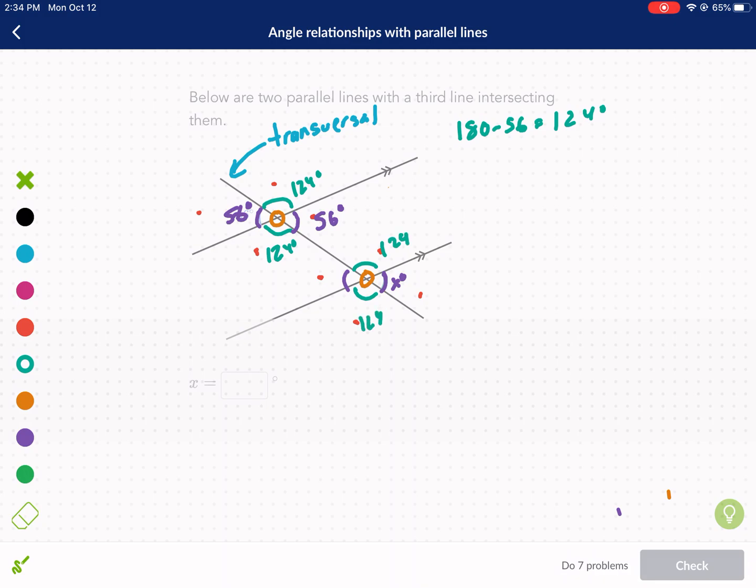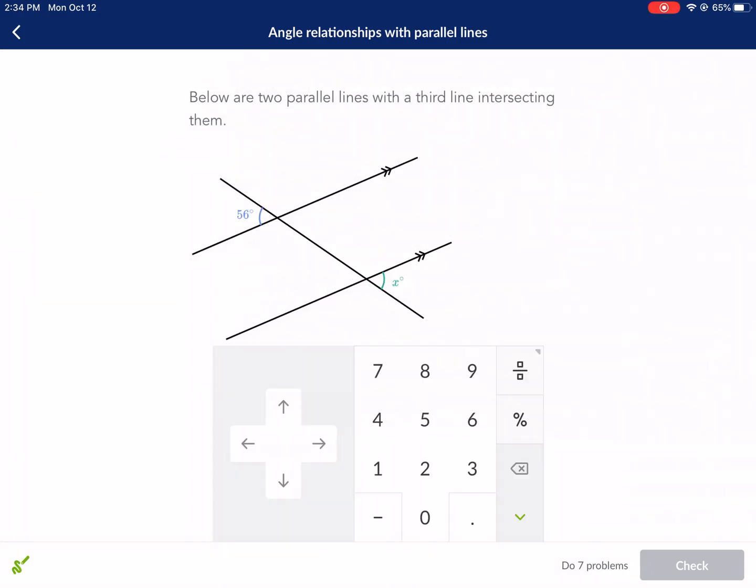So all eight of these angles are either going to be 56 degrees or 124 degrees. There's no in between. So 124, 124, 56, 56. So this angle X is 56 degrees.